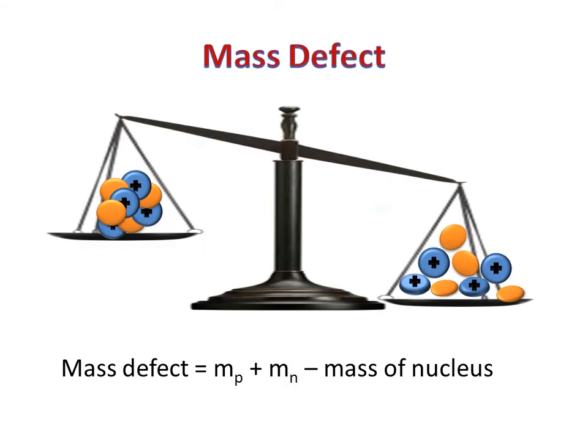If one were to measure the total mass of all the protons and neutrons individually, and find the mass of the nucleons of the atom, the individual particles would have a greater mass. This is due to the mass defect effect. The mass defect can be found by taking the mass of the individual nucleons and then subtracting the total mass of the nucleus.